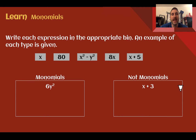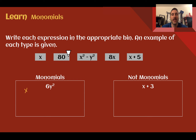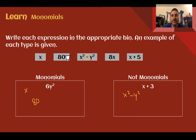Write each expression in the appropriate bin — an example of each type is given. Monomials are just dealing with multiplication, one term. Not monomials will have add, subtract, or divide within them. So x: is that only dealing with multiplication or just something by itself? Yes, x is a monomial. What about 80? 80 is also a monomial — no adding, subtracting, or dividing involved. x squared minus y squared — I can see the subtraction, making it not a monomial. 8x is 8 times x, one term, so that is a monomial. And x plus 5 — I have a plus sign, so it is not a monomial.